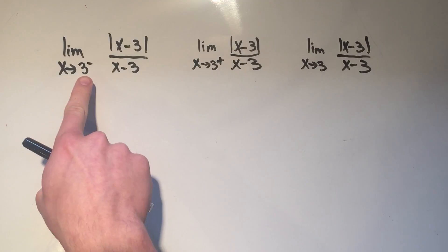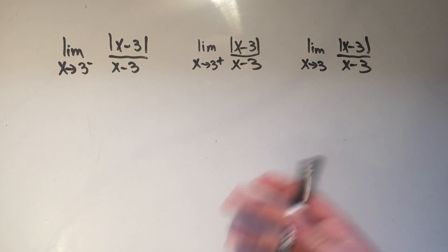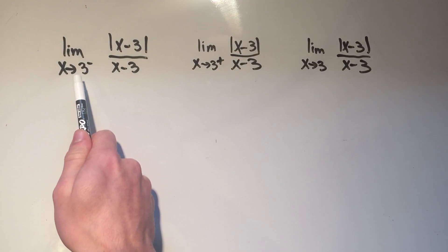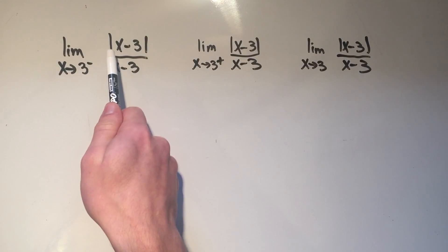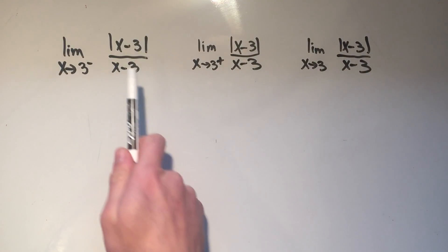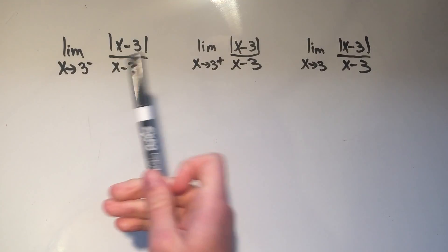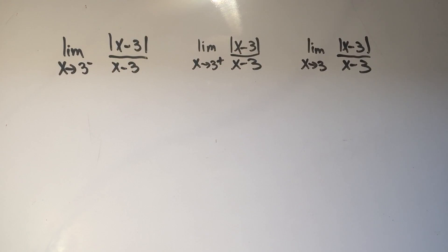Now I always say just plug in the number and see what happens, but it's pretty easy to see if you plug in three, I'll get three minus three over the absolute value of three minus three, and that'll be the absolute value of zero over zero, and the absolute value of zero is zero. So no matter what, I'm getting zero over zero for all of these, and you know that zero over zero is indeterminate and we have to do some algebra.